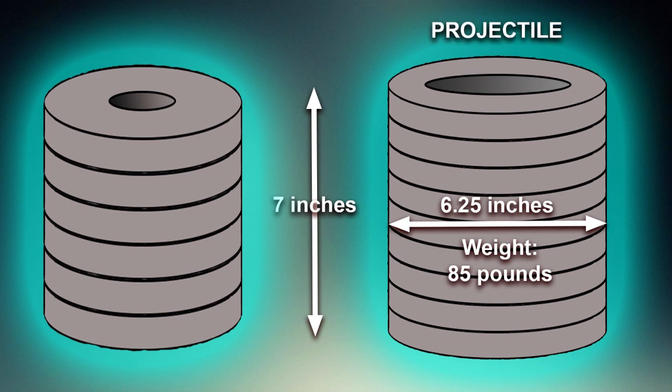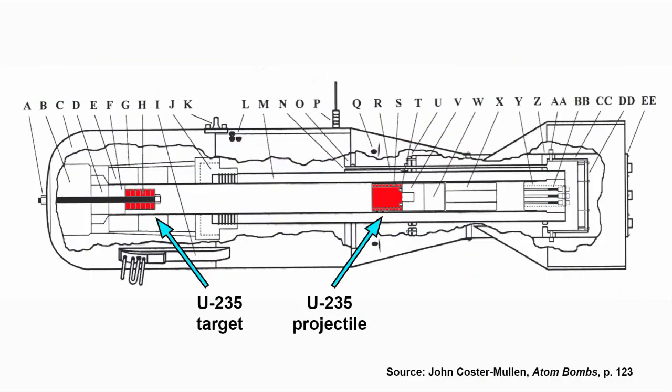This was the projectile. There was a tungsten carbide tamper attached to the back, which I'll explain about in a moment. The uranium rings and the tamper were all held together by an outer sheathing of copper. The whole thing would have looked like a big tin can.